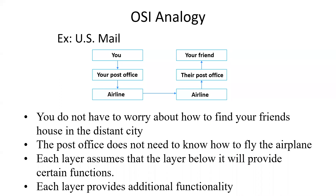Here's a useful analogy. Imagine you're sending a letter to somebody. You give the letter to the post office. The post office gives it to the airlines. The airlines fly it to another city, give it to their post office, and their post office puts it in your friend's mailbox. You don't have to know where in that foreign city they live — you just know their address. The post office doesn't need to know how to fly planes; they just contract with the airlines. Each layer relies on the layer below it to provide functionality.